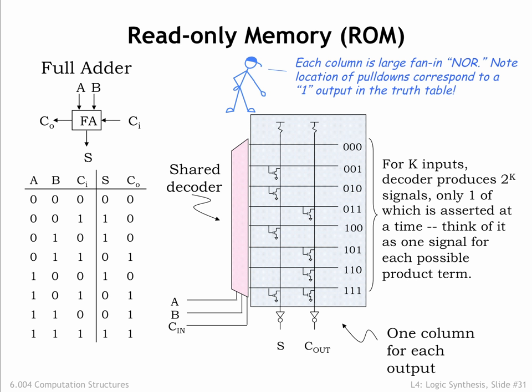Think of the decoder outputs as indicating which row of the truth table has been selected by the input values. All of the pull-down switches controlled by the high decoder output will be turned on, forcing the vertical column to which they connect low.